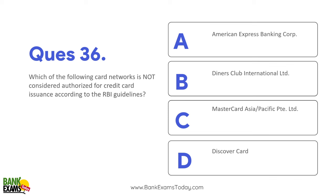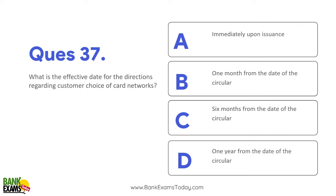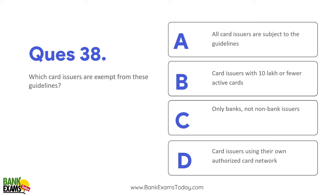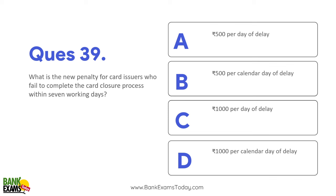Which card network is not considered authorized for credit card issuance according to RBI guidelines? Discover card nahi hai. Diner, Mastercard, American Express, RuPay, Visa - yeh sare authorized hain. What is the effective date for direction regarding customer choice of card network? Six months from the date of the circular. Ab customers choose kar sakte hain which card network chahiye - Visa, RuPay. Which card issuer is exempt from these guidelines? Card issuers jinke 10 lakhs se kamm active cards hain. New penalty for card issuers who fail to comply the card closure process - 500 rupees per calendar day.